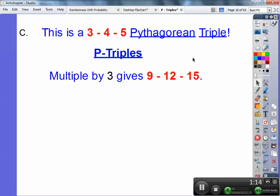Now check this out. If I multiply 3, 4, 5 times 3, 3 times 3, 4 times 3, 5 times 3, well that comes up, and that's also a P-triple also.